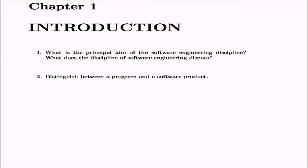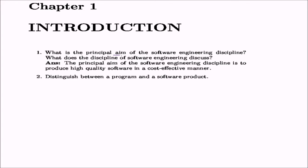The first question is: what is the principal aim of the software engineering discipline? We have covered this in the lectures, but we will formally answer it. The answer is that the principal aim of software engineering is to produce high quality software in a cost-effective manner.